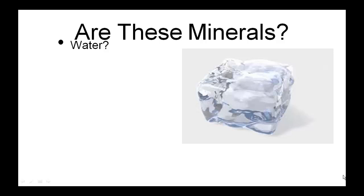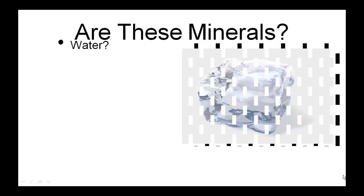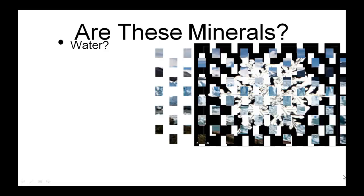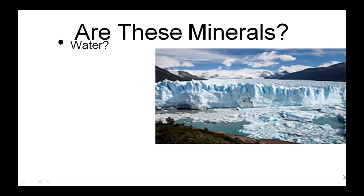How about naturally occurring? Where was this ice cube made? If it were made in a freezer, wouldn't that be considered man-made? So ice cubes are not minerals. How about snowflakes? Snowflakes are considered to be minerals because they form naturally in the Earth's atmosphere. And can you think of another naturally occurring ice formation? Glaciers. Yes, the ice in glaciers is considered to be a mineral, which means this is probably the most prevalent mineral on the face of the Earth. This glacier is from high in the mountains in Argentina.